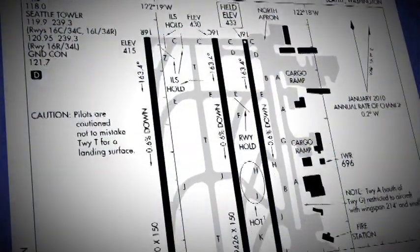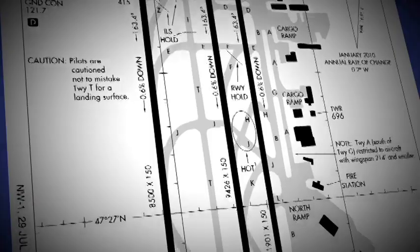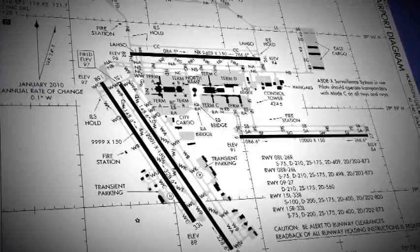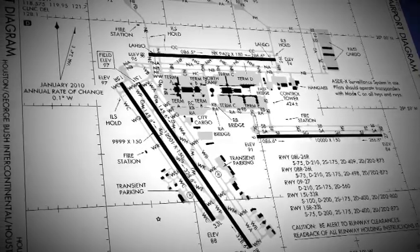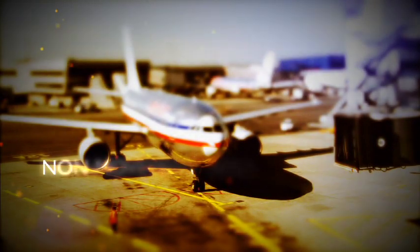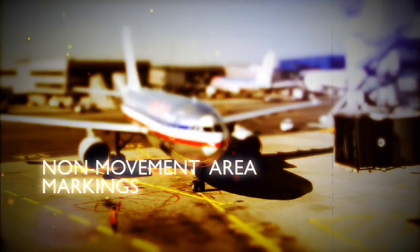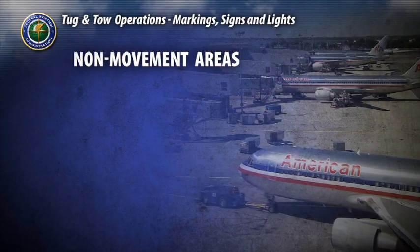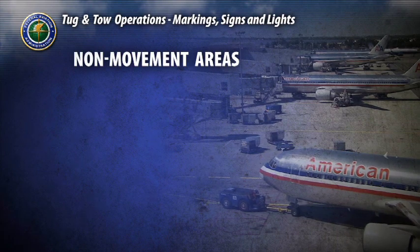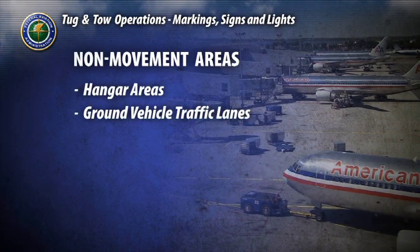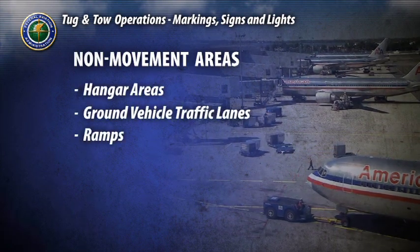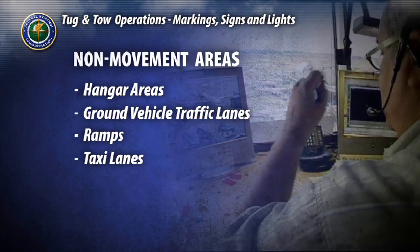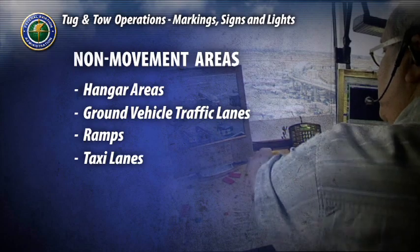It's important for you to be familiar with the layout of your airport. Study and review your particular airport's diagram and keep current on any updates and construction activity. This section addresses the markings you will encounter in a non-movement area. Non-movement areas at tower-controlled airports include hangar areas, ground vehicle traffic lanes, and ramps. Taxi lanes may be considered movement or non-movement areas depending on their configuration at individual airports.